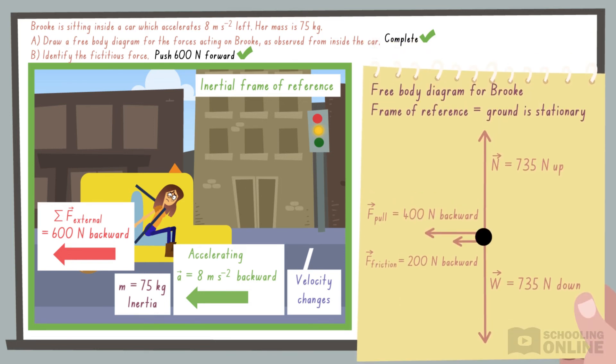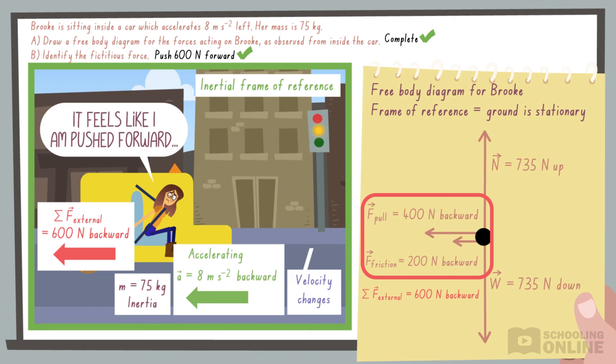As shown in this free body diagram, the net external force is caused by the pull from the seat belt and friction from the seat. To summarise, Brooke feels like she is pushed forward, but this is the opposite of reality, because the pushing force is not real.